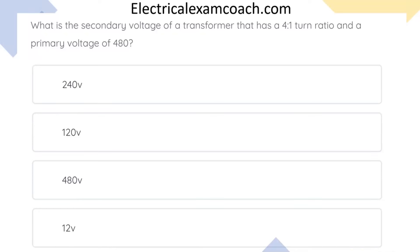What is the secondary voltage of a transformer that has a four to one turn ratio and a primary voltage of 480? The correct answer is 120.